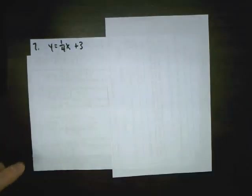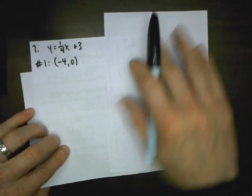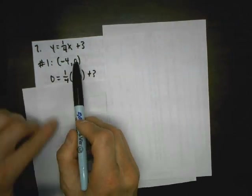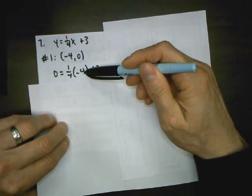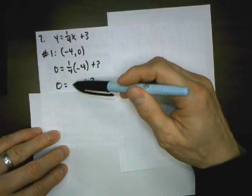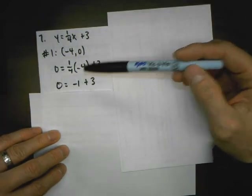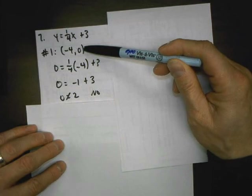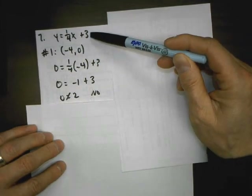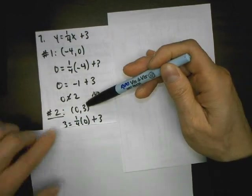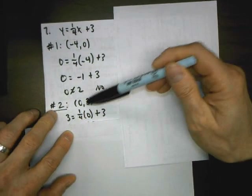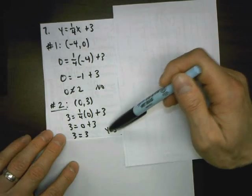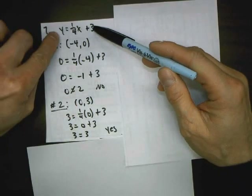Problem number seven: we have an equation and we have to say which of the given points are solutions. I plug each point in — x where x goes, y where y goes — and simplify. For the first point, one fourth times negative four: making it a fraction, doing factor trees, cross out ones, I get negative one. Using teams to add those together I get different numbers — this is not a true equation, so this point is not a solution and is not on the line.